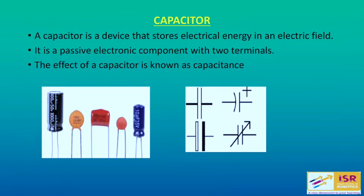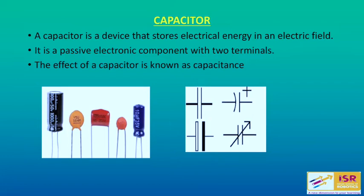Now we will discuss capacitors. A capacitor is a device that stores electrical energy in an electrical field. It is a passive electronic component with two terminals — passive means it does not have its own power source and takes power from a battery or other electric source. The effect of a capacitor is known as capacitance. Just like resistors, we have different values of capacitors, which you can identify by looking at them, and the symbol used for a capacitor is also shown.